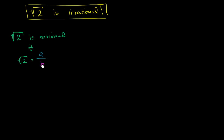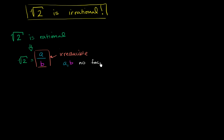If you can write anything as the ratio of two integers, you could obviously simplify it further — factor out any common factors to get it to a point where it is irreducible. So I'm going to assume that my a and b, that this fraction right over here is irreducible. This is important for setting up our contradiction. a and b have no factors in common other than 1. So this is irreducible — these two numbers are co-prime.